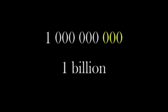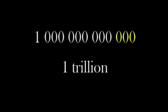Well, let's see. A million is a one with six zeros. Multiply that by a thousand and you get a billion. Multiply by a thousand again and you get a trillion. That's a one with twelve zeros, or a million times a million.